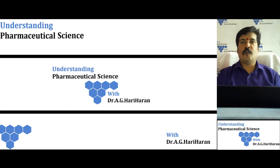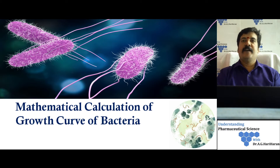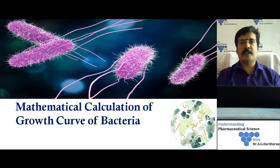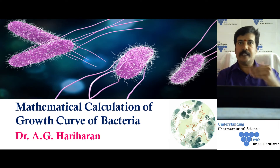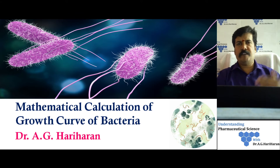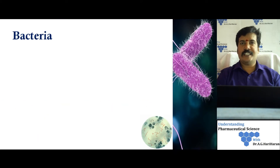Hello everyone, welcome to my series of lectures — Understanding Pharmaceutical Science with Dr. AG Hariharan. Today we are going to discuss the various mathematical calculations we can use to estimate the growth of bacteria using the bacterial growth curve, particularly how to calculate the mean generation time and mean growth rate constant, which is most useful for industrial microbiologists.